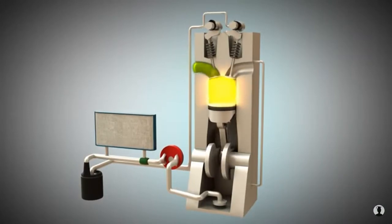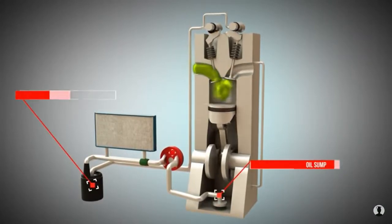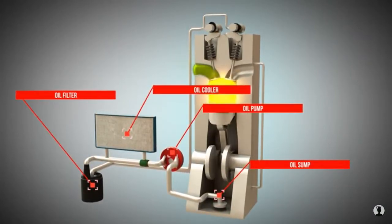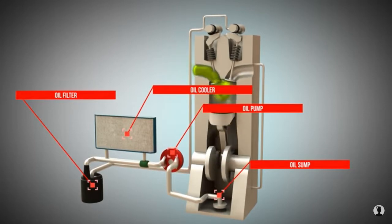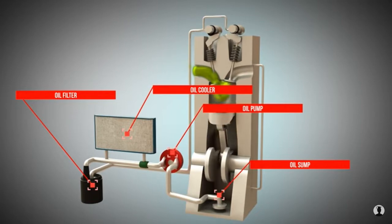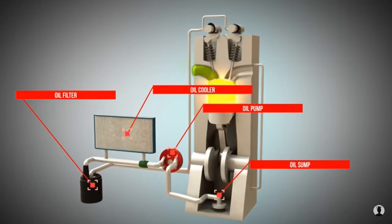Engine lubrication by means of oil is primarily used to reduce friction between moving parts and dissipate heat. In this animation, we want to describe wet sump lubrication using a four-stroke engine with only one cylinder.